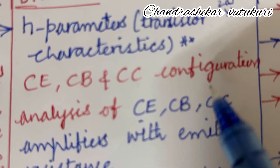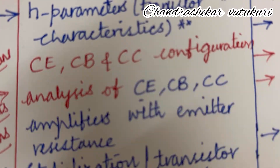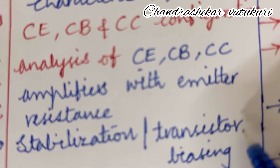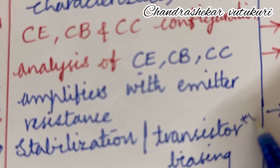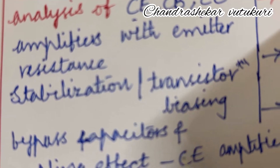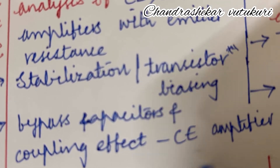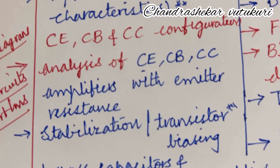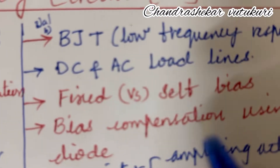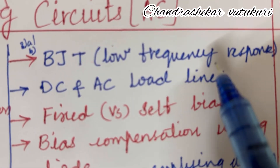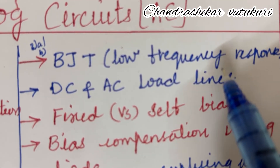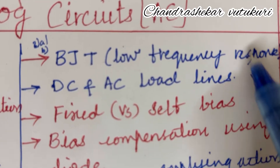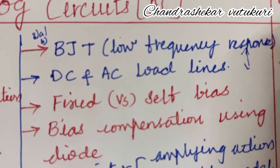Make sure to draw all diagrams and circuit diagrams very neatly, only in pencil. Stabilization and transistor biasing may be the short question. Bypass capacitors, coupling effect, and CE amplifier may be the long question this time — this is all about 2AB as well as 1AB. BJT low frequency response and DC and AC load lines may be the 3A question; out of these two you may be getting 3A.